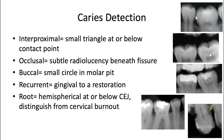For an interproximal lesion, this will typically appear as a tiny triangular radiolucency right at or below the proximal contact — that is the classic interproximal lesion. That one's fairly small, though — it's not into the dentin layer yet, so it can be hard to pick up on.